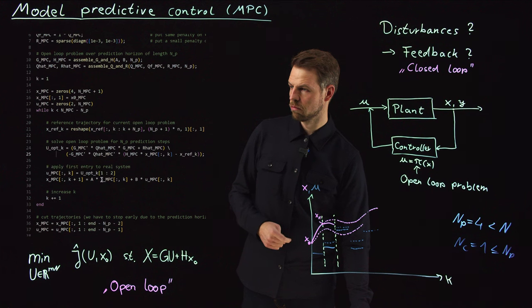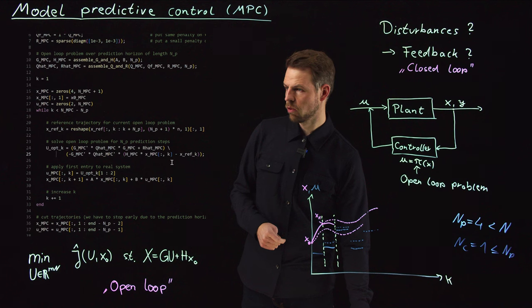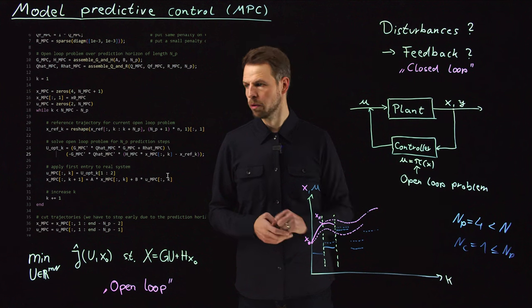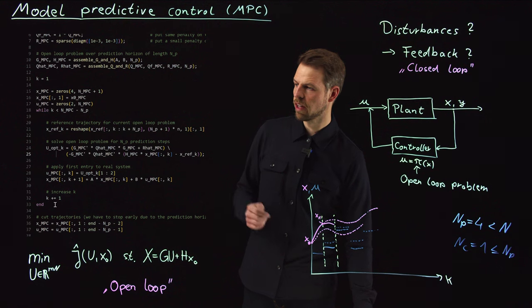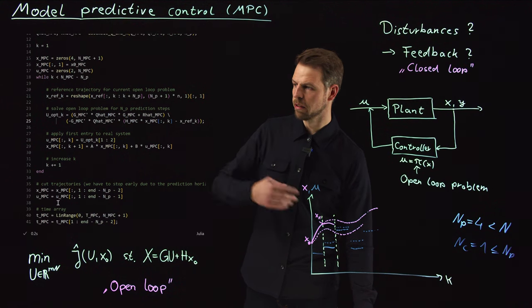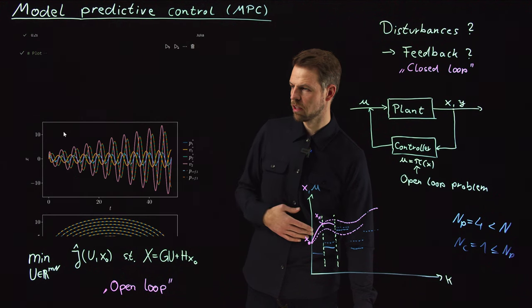And we then simply solve the optimization problem by solving this linear system. So this is the matrix backslash, and this is the right hand side vector, which is exactly as before, only that we have this X_ref now. And so what we now do is we apply the first entry, we add this to the U MPC trajectory where we collect the data and apply this first entry to the real system, which is now A X plus B U. And so this is how we close the feedback loop. And so you see the X_0 in our system is the X MPC at time step K. So this is how we get the feedback loop in order. So instead of the initial condition, we use the current system state as the initial condition. We then increase K and repeat. And the rest is just storing stuff in matrices and this is what we get.